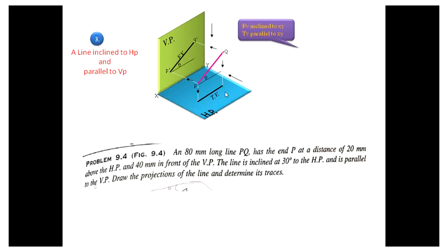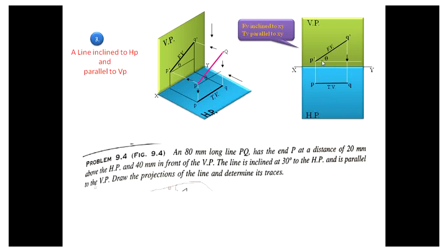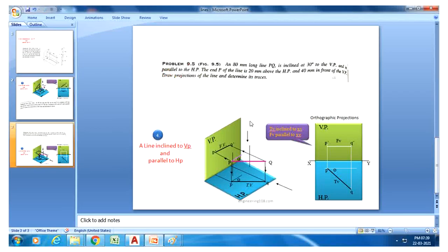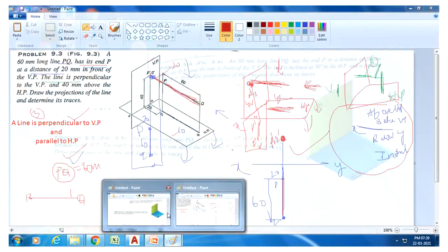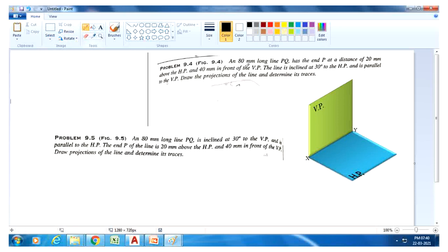The top view is the projection of P-dash and Q-dash, giving PQ. After rotating the plane 90 degrees in the clockwise direction, you get the orthographic view. Now I will draw this. The line is inclined — the question states an 80mm long line PQ with end P at 20mm above HP and 40mm in front of VP, inclined 30 degrees to HP and parallel to VP.